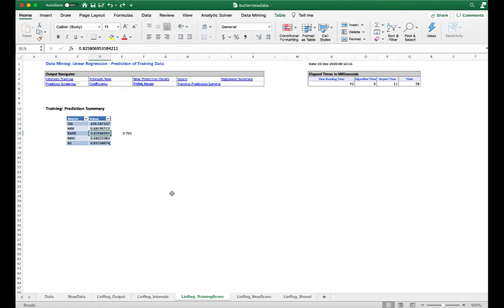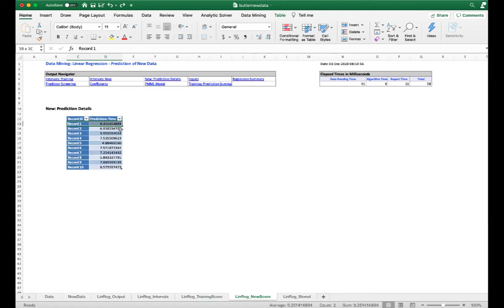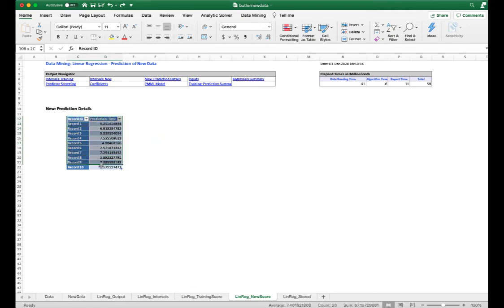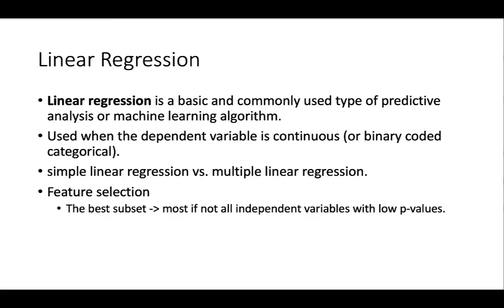In the new score tab we see the predicted time for each of the 10 new routes. To recap: linear regression is a basic and commonly used predictive analysis method. It is used when the dependent variable is continuous or a binary-coded categorical variable. The case of one explanatory variable is called simple linear regression, whereas more than one is called multiple linear regression.